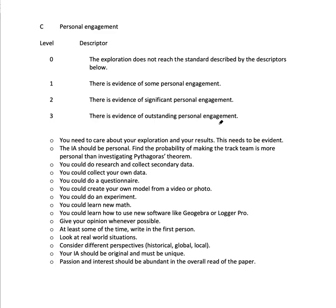Let me go through these bullet points and hopefully explain what outstanding personal engagement is, and then show you some good examples. First, you need to care about your exploration and your results, and this needs to be evident. That is easier said than done. If you have an aim that is really personal — like the snowboard jump modeling guy — it's easy to show that you care. It's harder if you're looking at the correlation between GDP and crime or whatever. But whatever you're doing, you need to show the reader that you care about your results, so comment on your results and give your opinion. The IA should be personal.